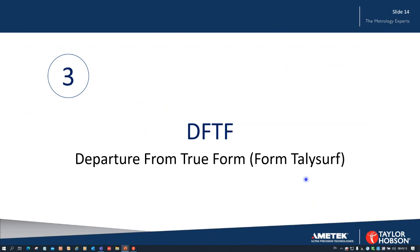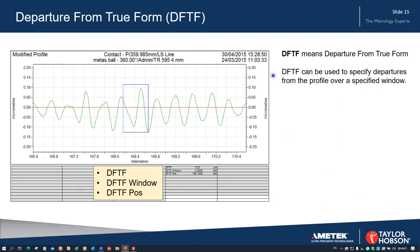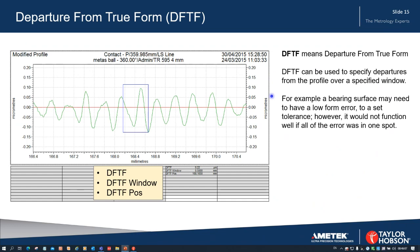Let's have a look now at departure from true form. Previously we looked at an area where leakage may occur circumferentially. If we consider a shaft and a seal, we may find that leakage will also occur along the length of the shaft, so we're interested in form variations along the shaft. We would measure this on a form TallySurf instrument or on the Talyrond, but in a linear direction rather than circumferentially. DFTF — departure from true form — can be used to specify departures from the profile over a specified window, just as we saw on the roundness profile. A bearing surface may need a low form error to a set tolerance, but again it would not function well if all that error occurred in one spot.